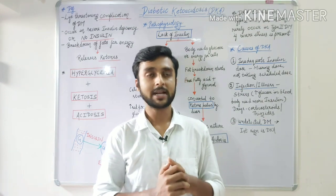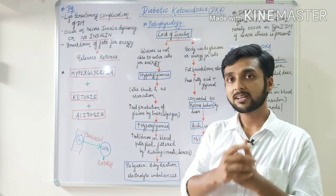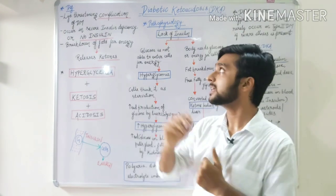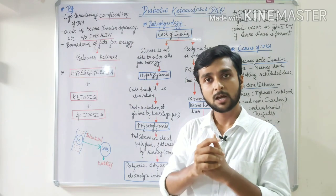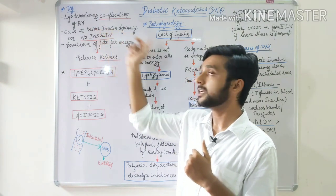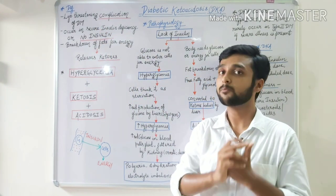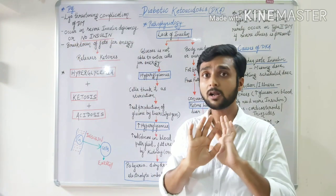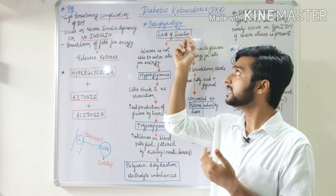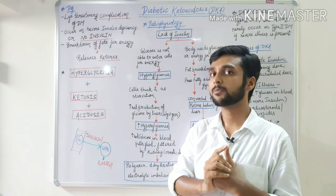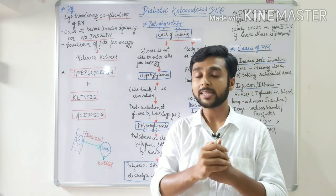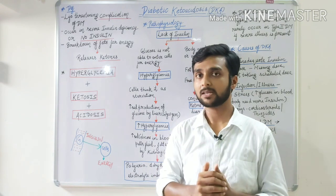As we know from the name, Diabetic Ketoacidosis is related to diabetes. The definition is that it is a life-threatening complication of diabetes mellitus, occurring when there is severe insulin deficiency — essentially no insulin in our body. Insulin is a hormone released by the beta cells of our pancreas.